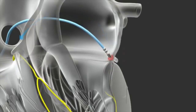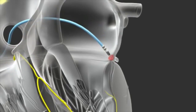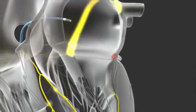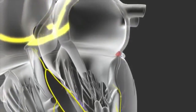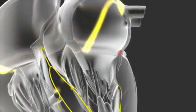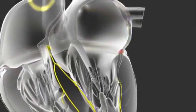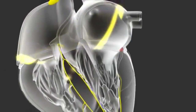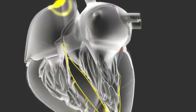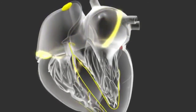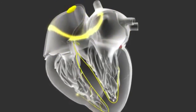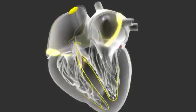Once the ablation is completed, the catheters are removed and a small bandage is applied to the area where the catheter was inserted. Patients are usually out of the hospital by the next day and can resume normal activities.